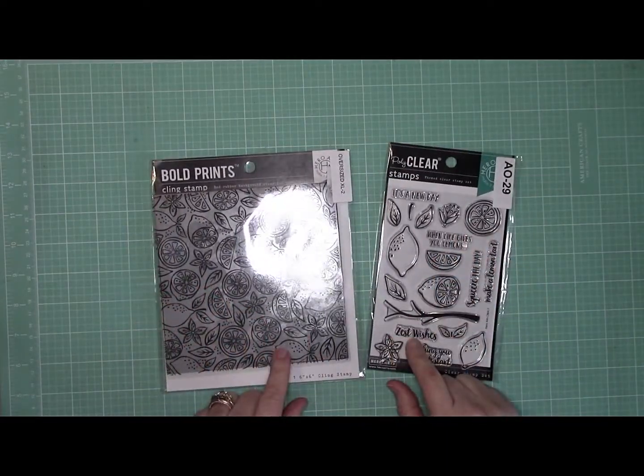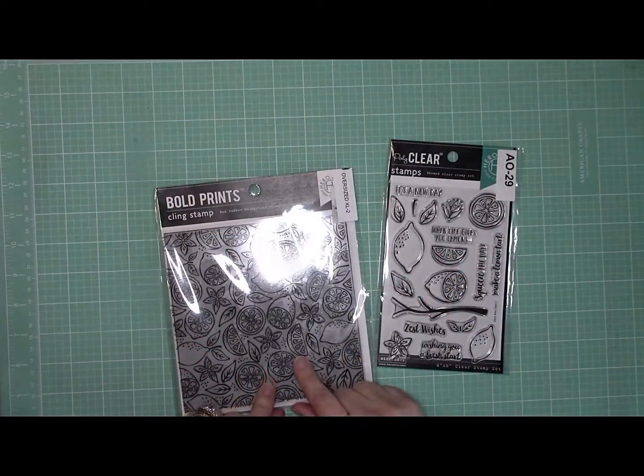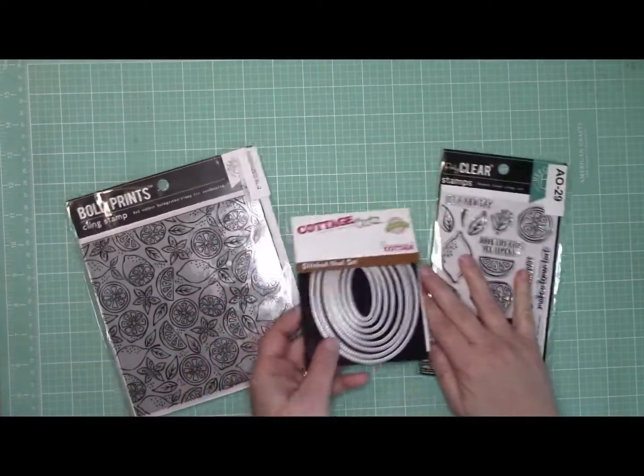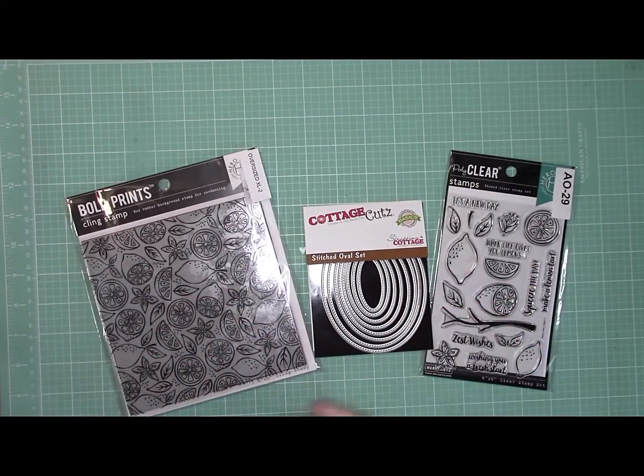So I'm going to use Hero Arts Fresh Citrus Bold Prints for my background, and I'm going to also use Zest Wishes and use some of those stamps. I'm going to use the Cottage Cuts Stitched Oval set for my dies, and here's some leftover plastic packaging that I'm going to use for the windows.